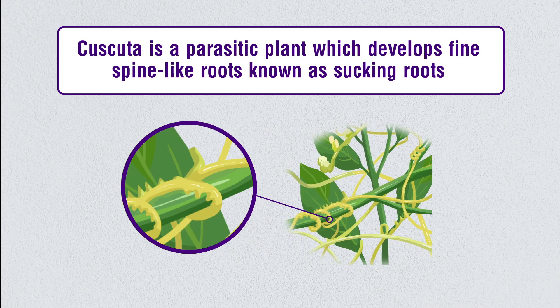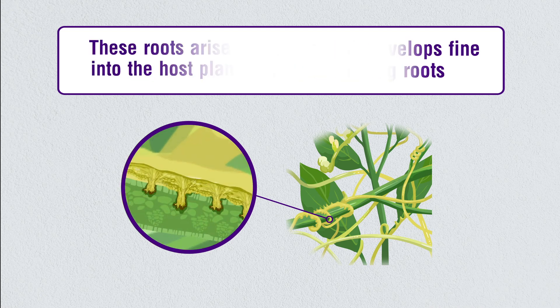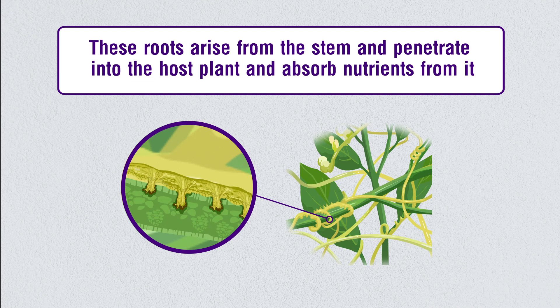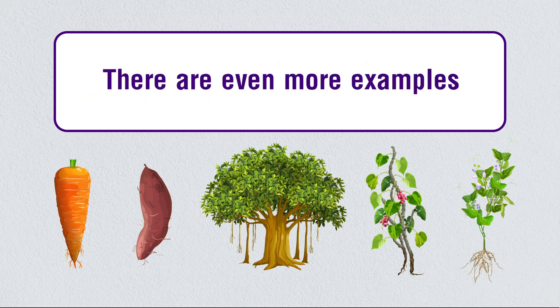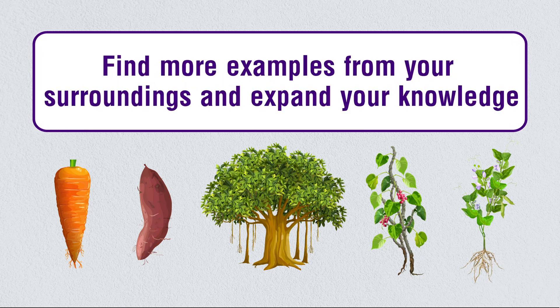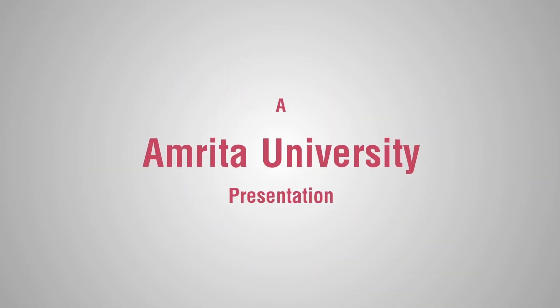Cuscuta is a parasitic plant which develops fine spine-like roots known as sucking roots. These roots arise from the stem and penetrate into the host plant to absorb nutrients from it. We have now learned some of the modifications of roots — find more examples from your surroundings and expand your knowledge.